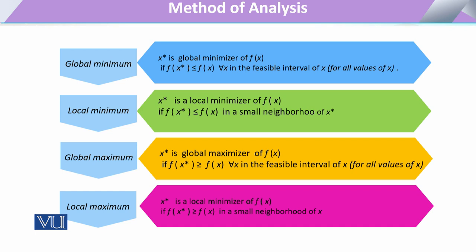When we say that a point called x-star is the point attained from optimization, it is that value of x that satisfies our constraint conditions and is able to provide us with the objective function solution. This point will be the global minimizer if it fulfills the condition that this point is less than or equal to the function of x for the set of all other points — meaning all values of x give our global minimum.